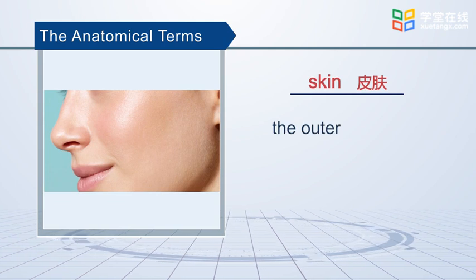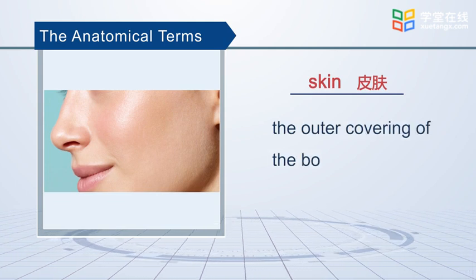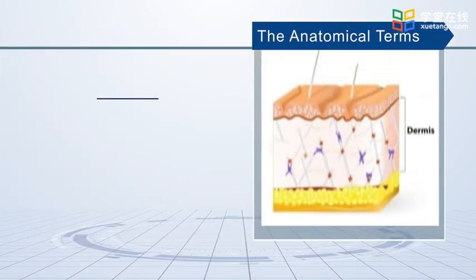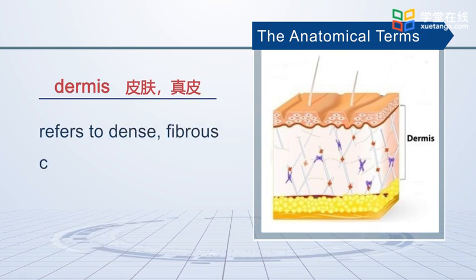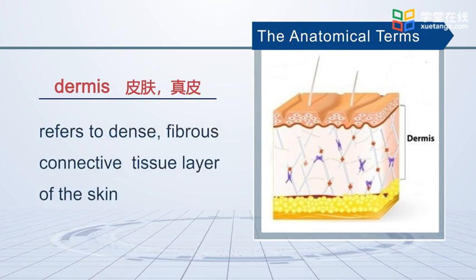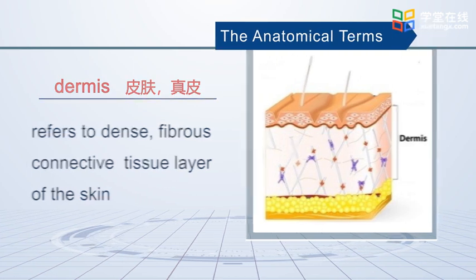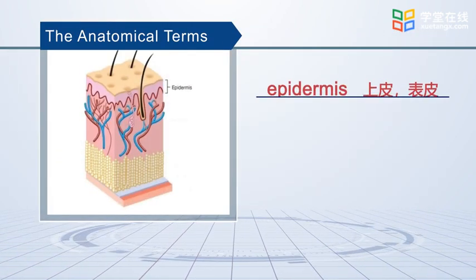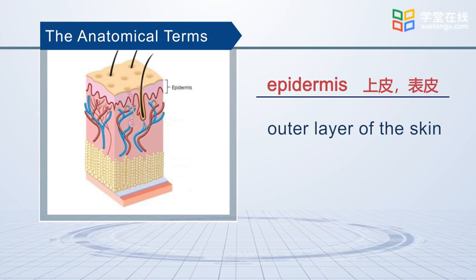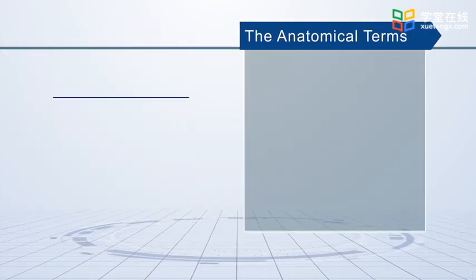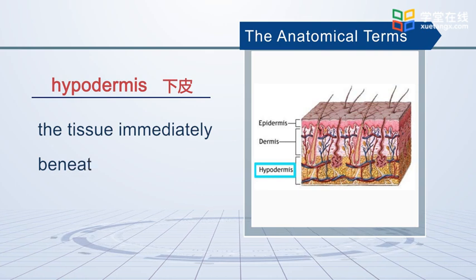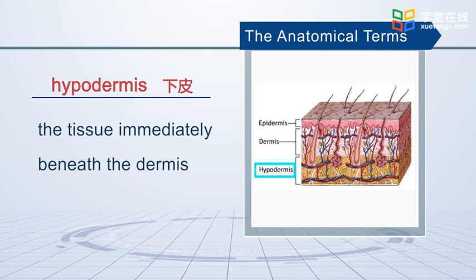Skin is the outer covering of the body. Dermis refers to dense fibrous connective tissue layer of the skin. Epidermis is the outer layer of the skin. Hypodermis is the tissue immediately beneath the epidermis.